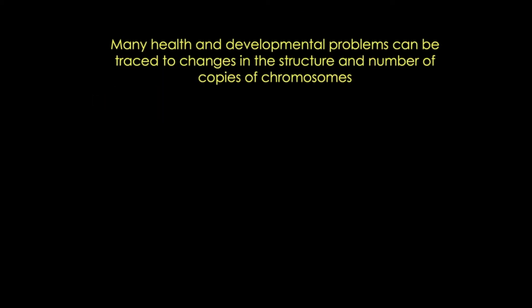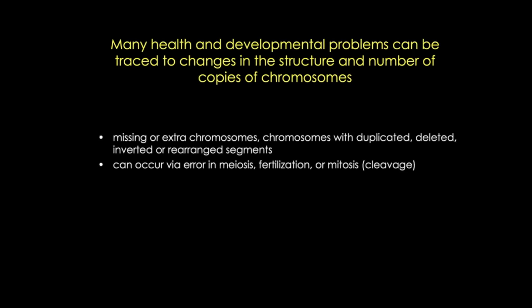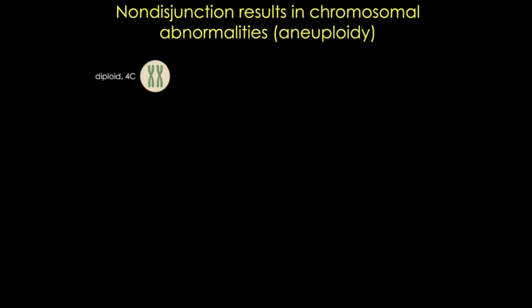Unfortunately, we know that many health and developmental problems in humans can be traced back to changes in the structure and number of copies of chromosomes. Around 50% of spontaneous abortions are due to chromosomal abnormalities, and many of these abnormalities arise in the germline because of errors in meiosis. Gametes that arise from these errors will contain missing or extra chromosomes with duplicated, deleted, or rearranged segments. Aneuploidy — the presence of an abnormal number of chromosomes in a cell — can arise from what we call non-disjunction during meiosis. Human cells have 23 pairs of chromosomes: 22 autosomes and two sex chromosomes. Only reproductive cells undergo meiosis. Normally, a diploid cell will give rise to four haploid gametes with a single set of chromosomes. Non-disjunction happens when chromosomes fail to separate normally during either meiosis I or meiosis II.